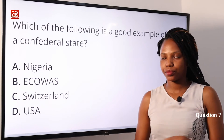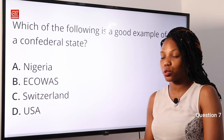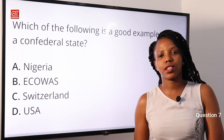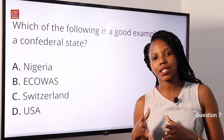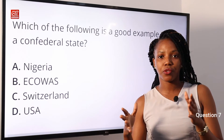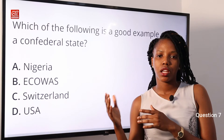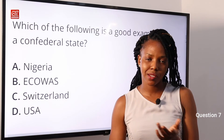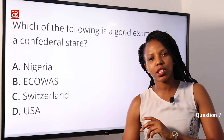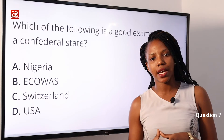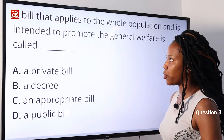Question 7: Which of the following is a good example of a confederal state? A: Nigeria; B: ECOWAS; C: Switzerland; D: USA. Confederalism is a system of organization in which there is a union of states where the states have control of both internal and external affairs. An example of this is ECOWAS — an organization located in Nigeria whose purpose is to promote regional cooperation and economic integration. Option B is the correct answer.